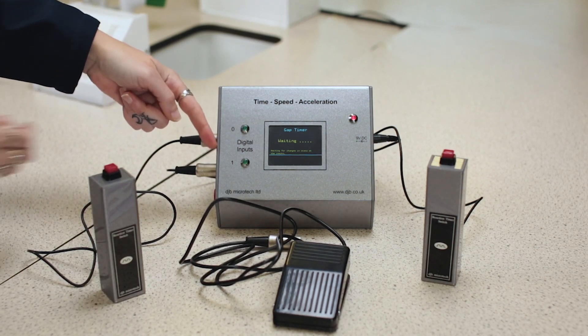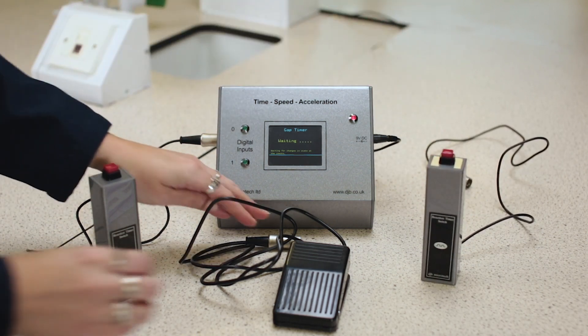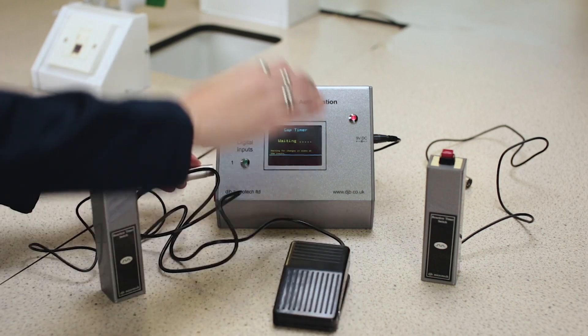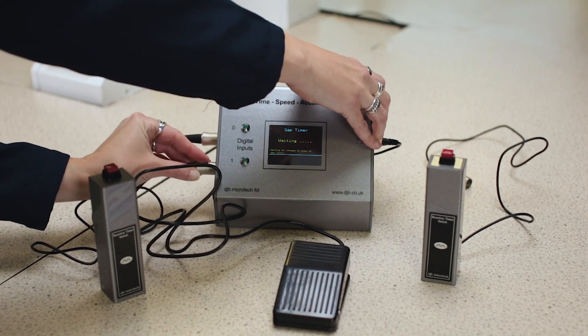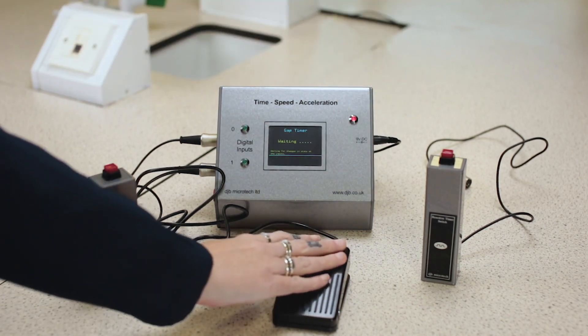Remove the reaction timer hand switch from channel 1 input and replace this with a foot switch reaction timer. Check the foot switch is connected to the TSA by pressing the pedal and ensuring that the green LED lights up.